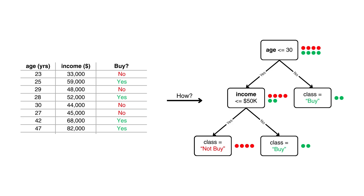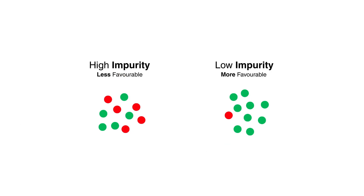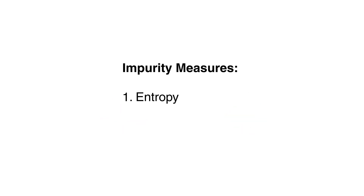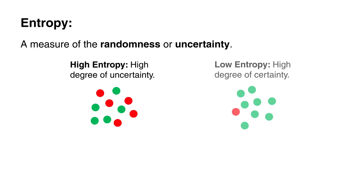But how do we actually build a decision tree from a dataset? How does the tree know which feature to split on at each node and what value to split at? The key idea is that we want to split the data such that the resulting subsets are as pure as possible, meaning each subset contains mostly one class. Two popular ways to measure the impurity in a node are entropy and Gini impurity. Entropy is a measure of randomness or uncertainty — high entropy indicates a high degree of disorder, and low entropy indicates a high degree of certainty, i.e. the node mostly contains a single class.